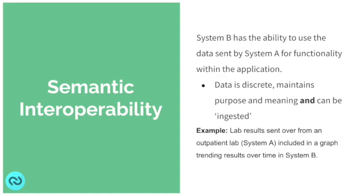The third type is semantic interoperability. With this one, we're starting to get a little more purposeful with the data. Similar to structural, we do have discrete elements transitioning to the receiving system. However, with semantic, we have the ability to incorporate those discrete elements into the receiving system and utilize them as part of the functionality. A great example would be outpatient lab data being sent to a primary care physician's office or to a hospital EHR, where the lab data can file discreetly by date, test type, and results — and those results can then be incorporated into other data within the system to trend the lab results over time, drawing from both hospital and outpatient lab sources.